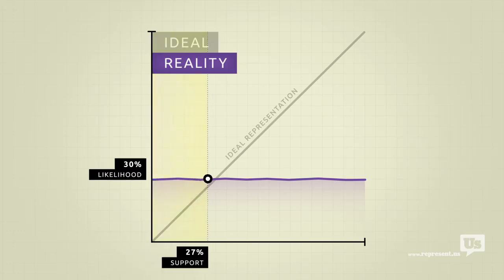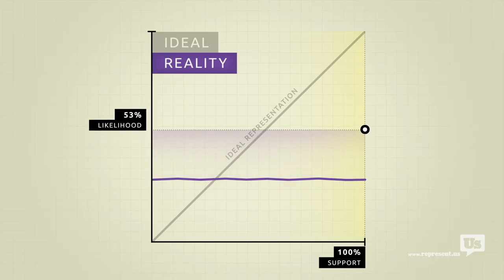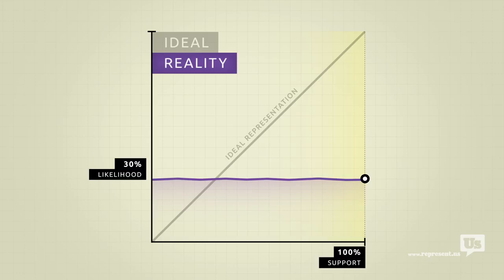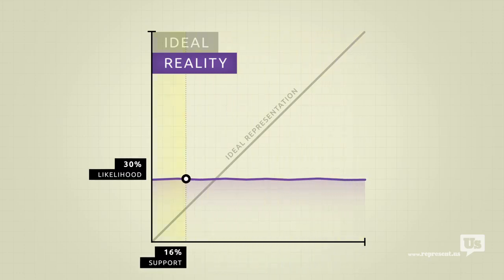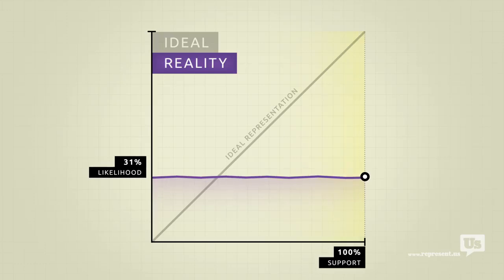Now, take an incredibly popular idea, the most popular idea this country has ever seen, and there's also about a 30% chance of it becoming law. This means that the number of American voters for or against any idea has no impact on the likelihood that Congress will make it law.